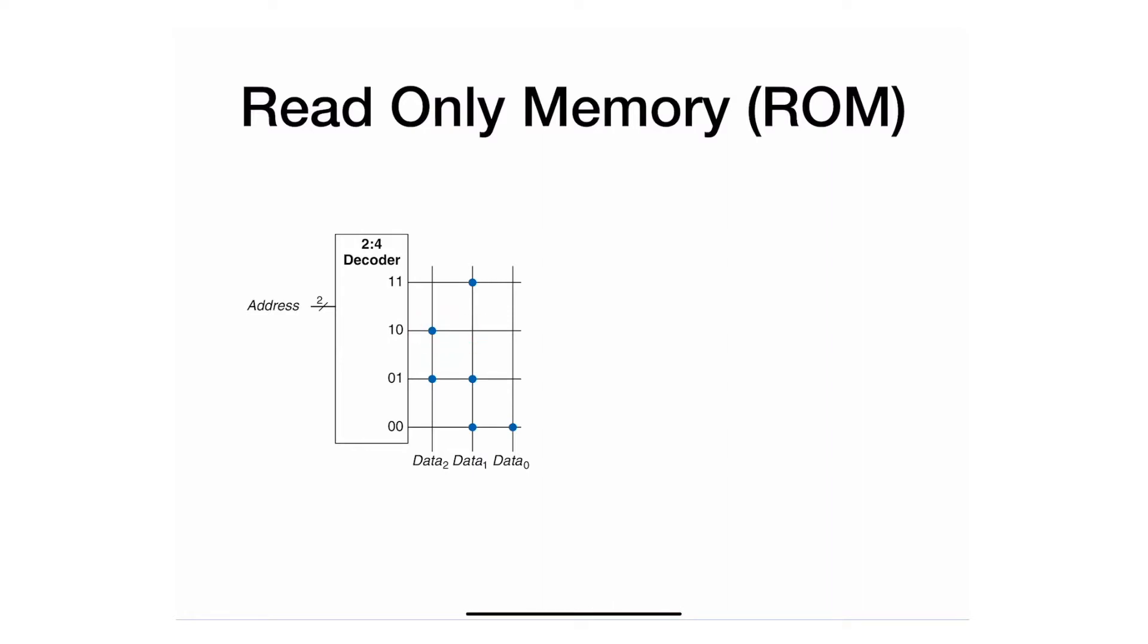Let's assume I put the address zero one. You can see I have one here, one here, and zero. So effectively, I am reading one one zero. That's how that representation works.